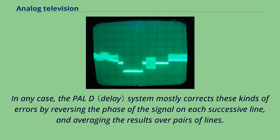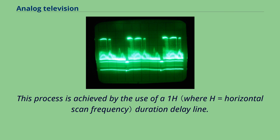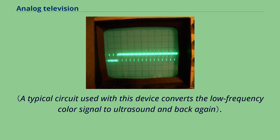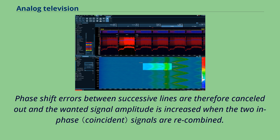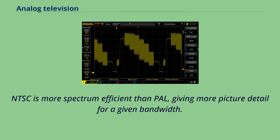NTSC is more spectrum efficient than PAL, giving more picture detail for a given bandwidth. This is because sophisticated comb filters in receivers are more effective with NTSC's 4-field color phase cadence compared to PAL's 8-field cadence. However, in the end, the larger channel width of most PAL systems in Europe still give their PAL systems the edge in transmitting more picture detail.